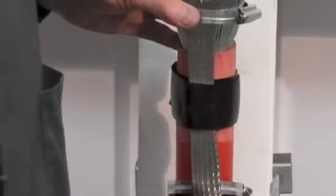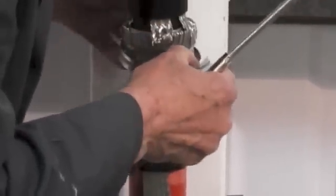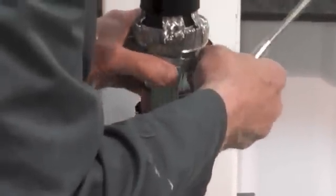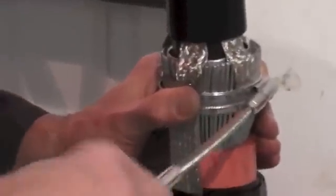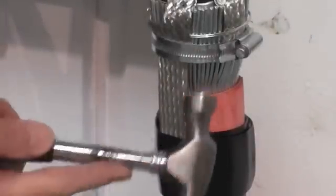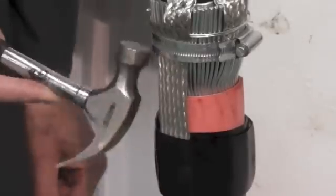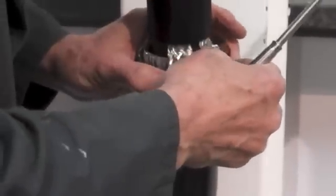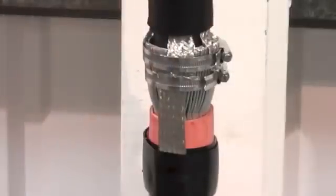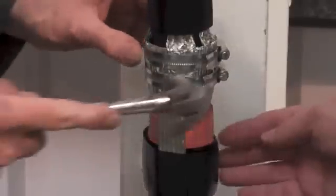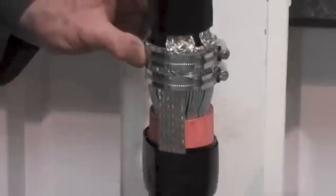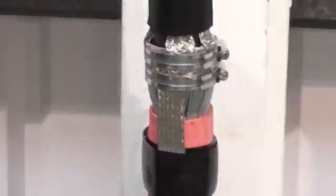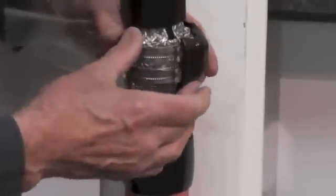Now secure the earth straps to the armor wires with the jubilee clamps shown. Reposition if necessary and continue tightening. To remove the sharp edges, apply some more Black Mastic over the clamp buckles and then around the whole earth bond area.